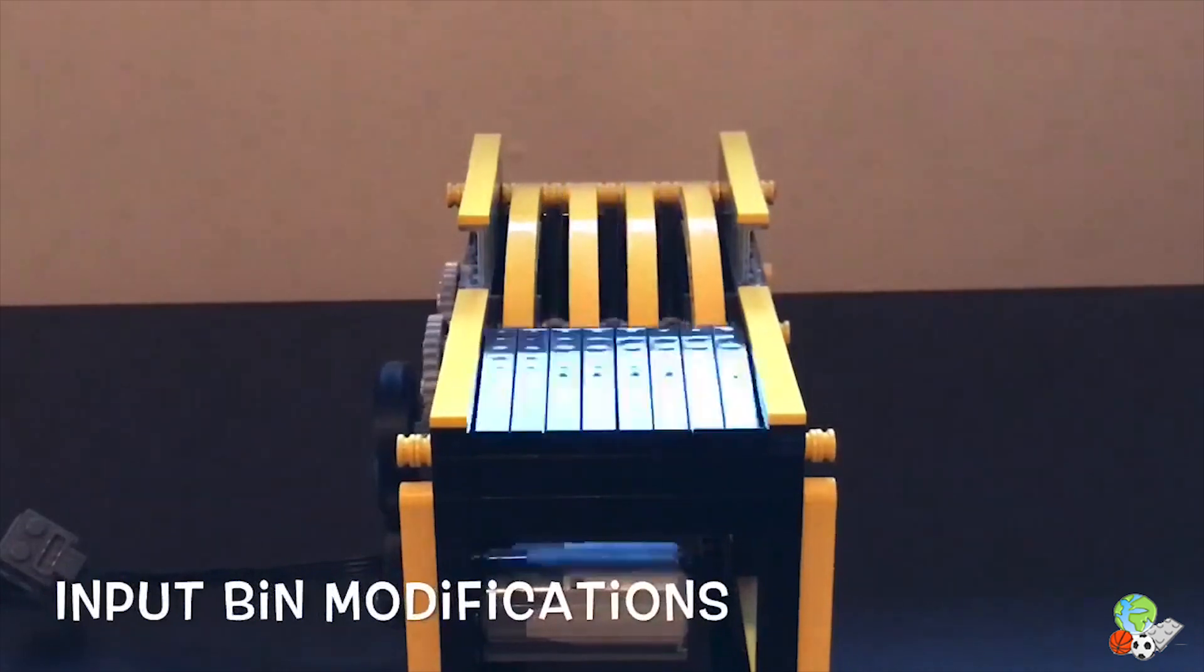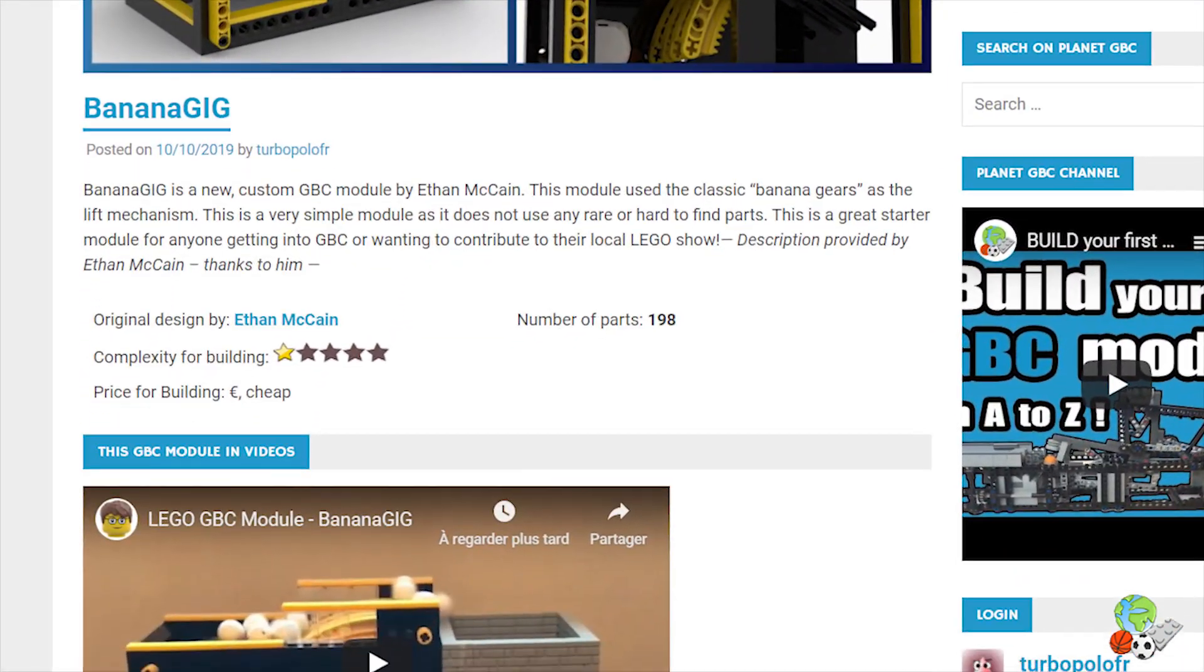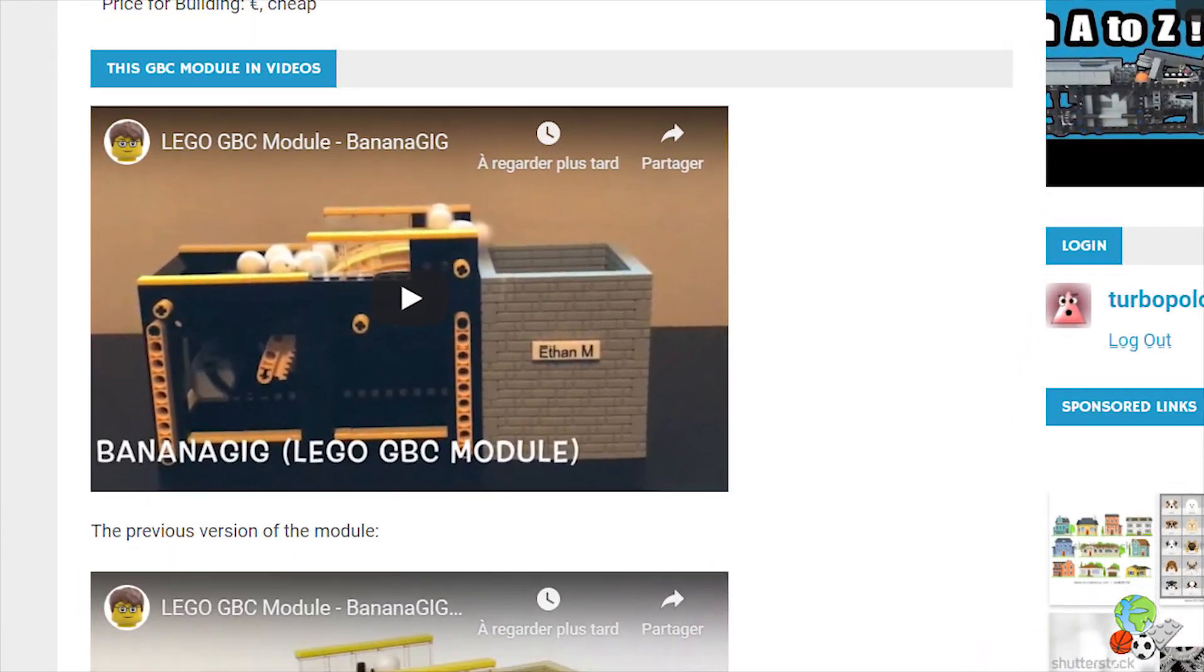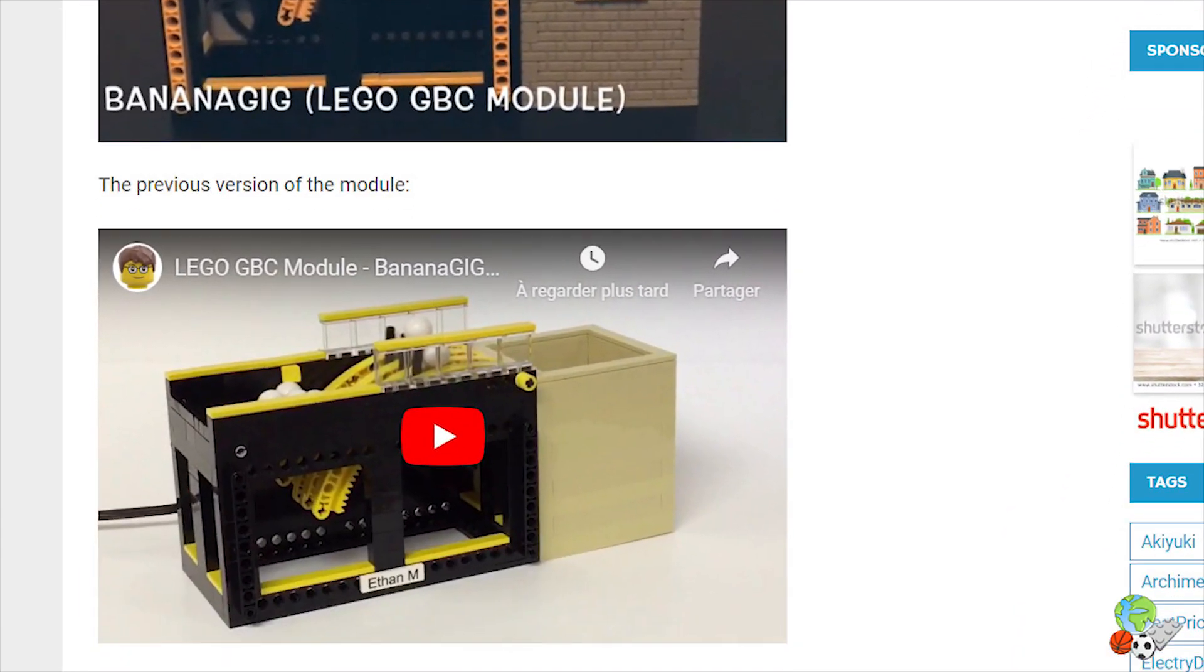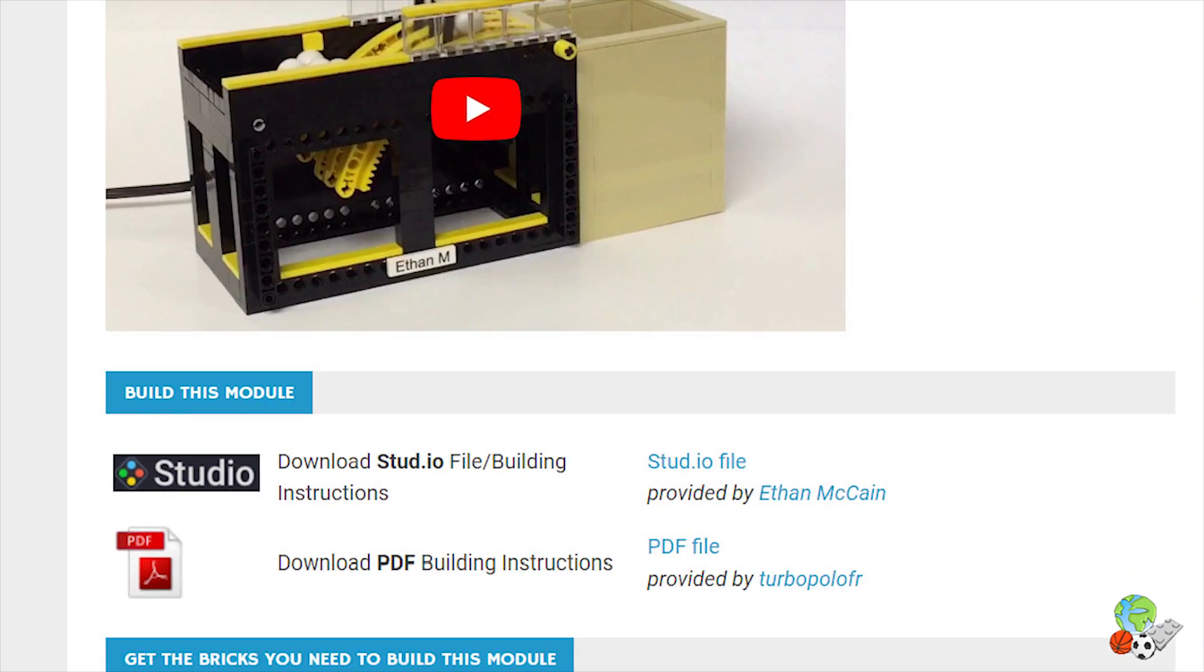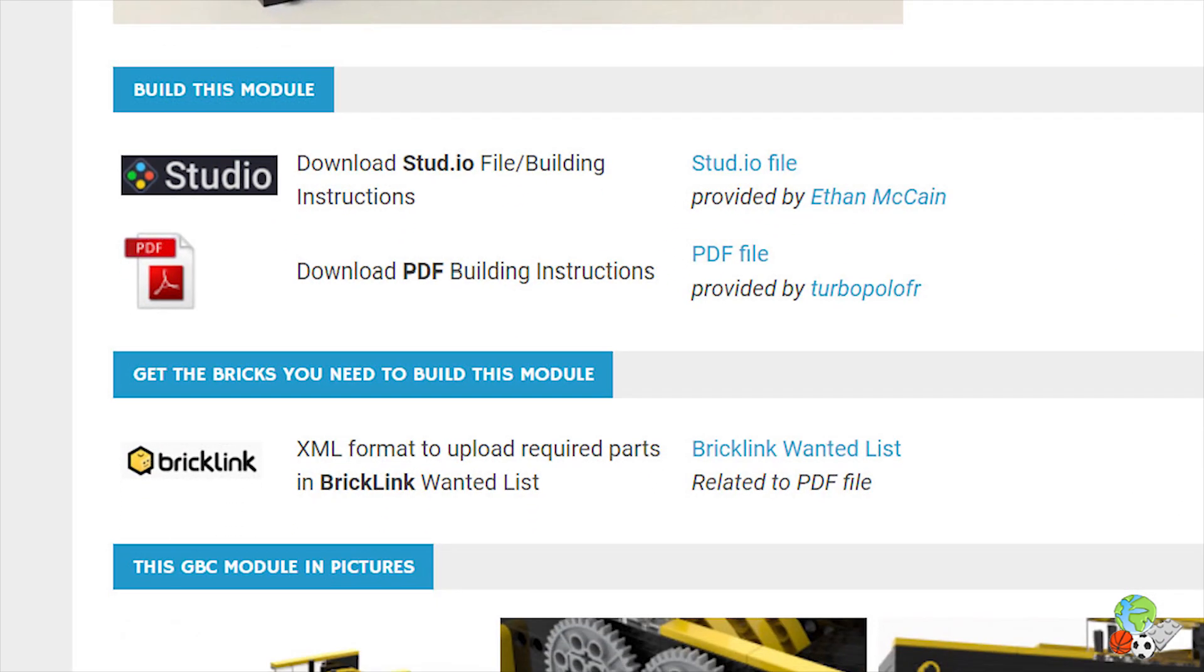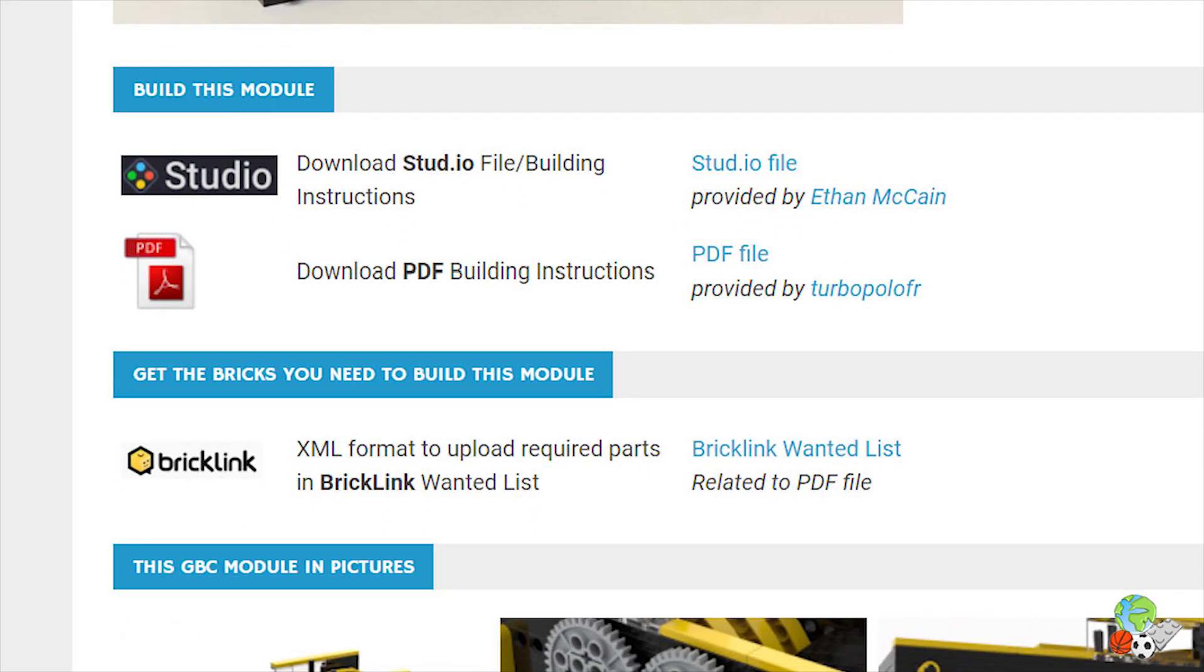The form of this GBC module has been updated on Planet GBC so if you are the lucky owner of spare banana gears lego parts you can find on my website free building instruction to reproduce this super cool GBC module that uses less than 200 lego parts.